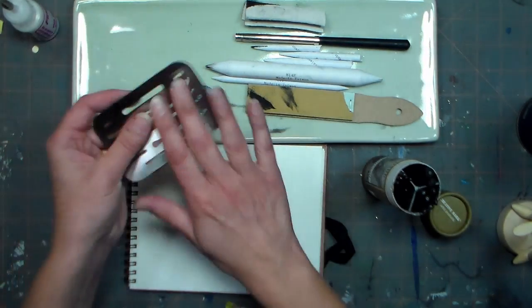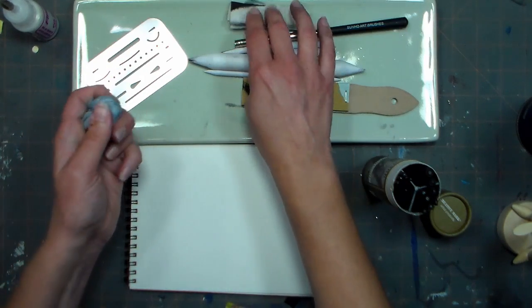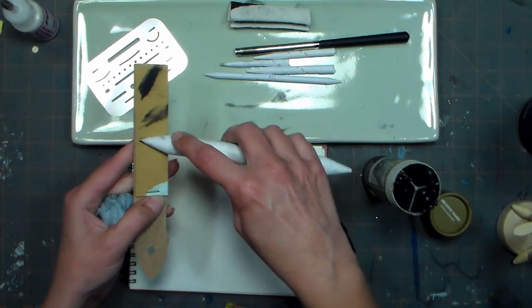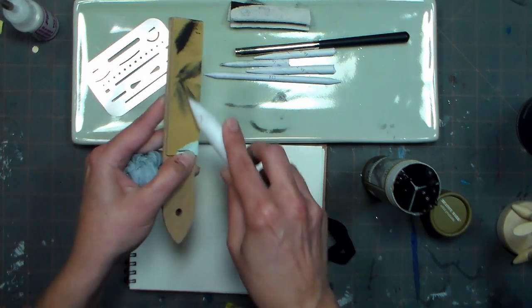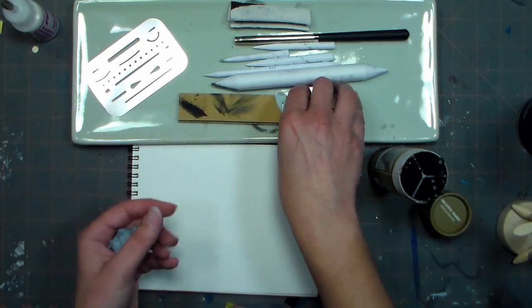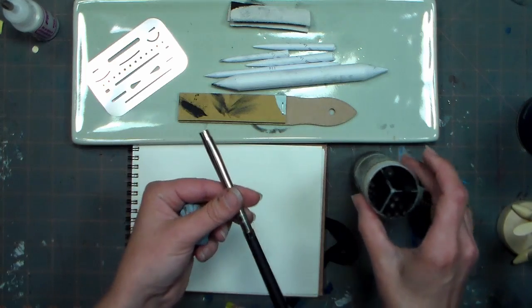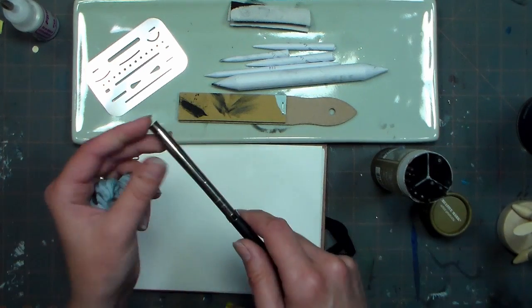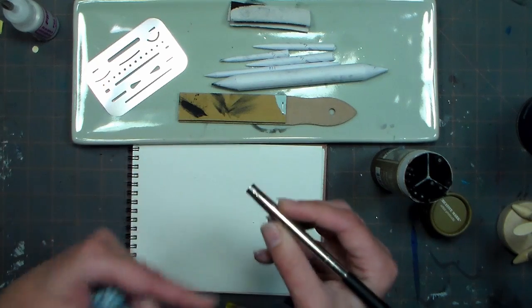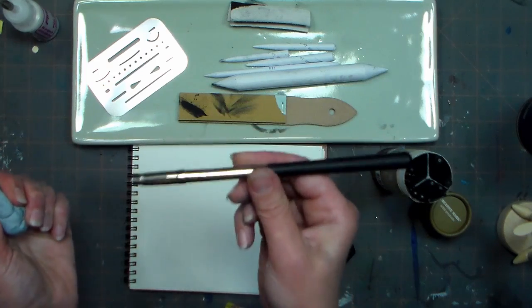You also get an eraser shield, which I'll show you how to use, a kneaded eraser, some blending stumps, a blending chamois, and the sandpaper stump, which is actually used for cleaning your blending stumps if you want to get back to the white felted stump, or you can use it to sharpen your charcoal or pastels. I really like this holder - when your pencils get short, you could pop that right in this little pencil holder and slide up the collar, and then you can extend the life of all of your pencil supplies.